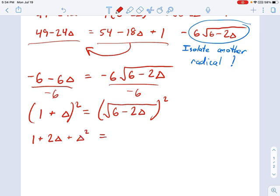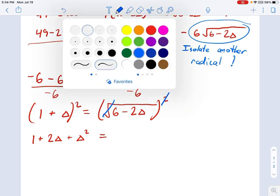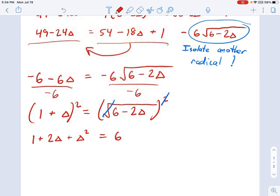And on the other side, that square in the exponent cancels out the radical sign, so what we get is 6 minus 2 delta. And now it's a quadratic equation, all the radicals are gone, that's really great.